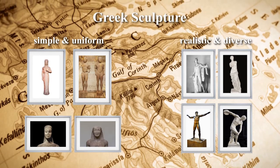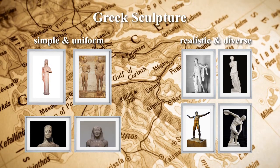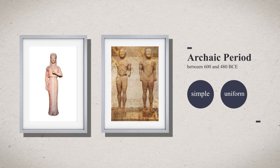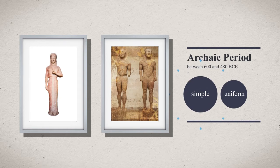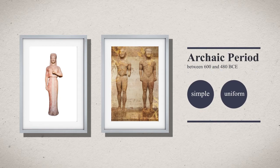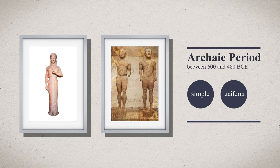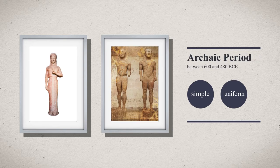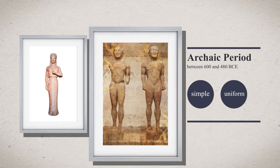The period when the sculptures were simple and uniform was the Archaic Period, between 600 and 480 BCE. Greek statues from this period were meant to symbolize humans.